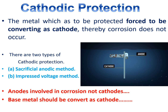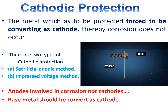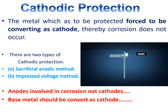In cathodic protection, the metal that has to be protected is called the base metal. That base metal should be forced to act as a cathode, thereby corrosion does not occur. Generally, the base metal has some anodic nature, so it would normally be involved in corrosion. You need to convert that anodic material into a cathodic metal by applying some force. This method is called cathodic protection.